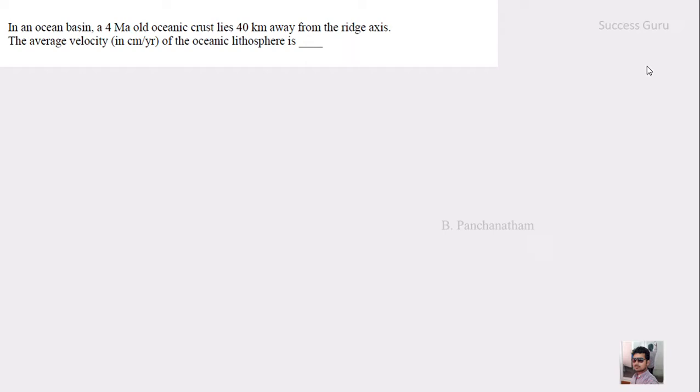So the first question is that in an oceanic crust, a 4 million annum old oceanic crust lies 40 km away from the ridge axis. The average velocity of the oceanic lithosphere is dash. So they had given the distance from mid oceanic ridge that is 40 km and the age of the rock that is 4 million annum. And they had asked for the average rate of spreading, that is the average velocity of the movement of the oceanic lithosphere.